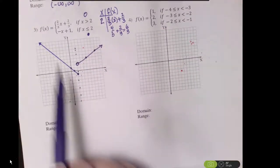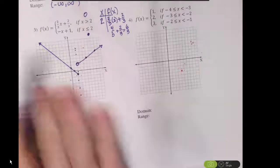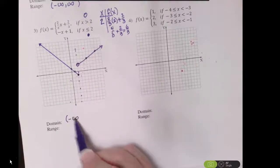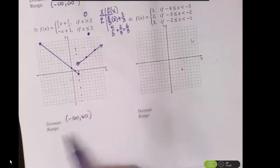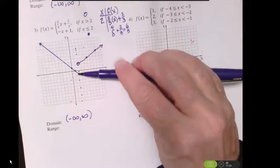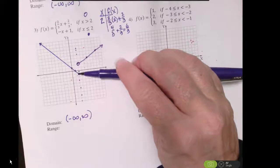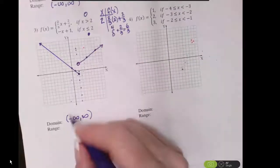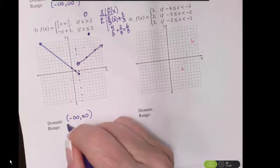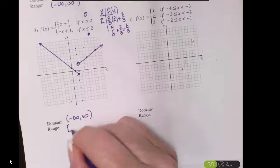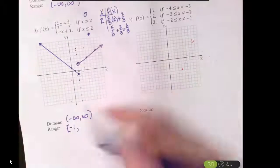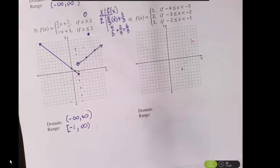My domain goes left to right — it's defined everywhere. The deal with my range is that it's never below negative 1 here. Negative 1 is a minimum value and it has a closed circle on it, but it does go up forever to infinity.